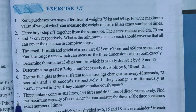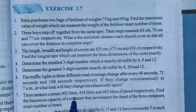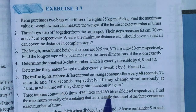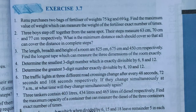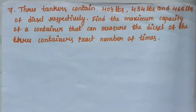Next coming to question number 7. Three tankers contain 403 liters, 434 liters and 465 liters of diesel respectively. Find the maximum capacity of a container that can measure the diesel of the three containers an exact number of times.